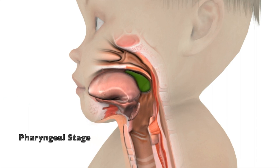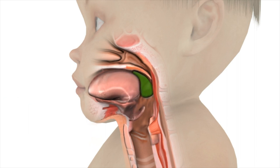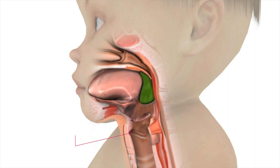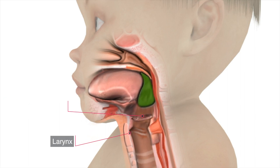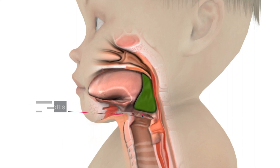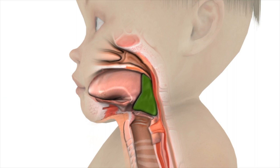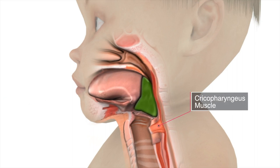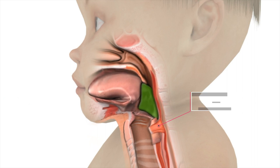The pharyngeal stage is a rapid sequential activity during which the bolus is propelled into the esophagus. The larynx elevates while the epiglottis flips down, protecting the airway. Not clearly shown are the pharyngeal muscles, which contract squeezing the bolus downward. The cricopharyngeus muscle, or upper esophageal sphincter, relaxes and opens to allow food and liquids to pass into the esophagus.